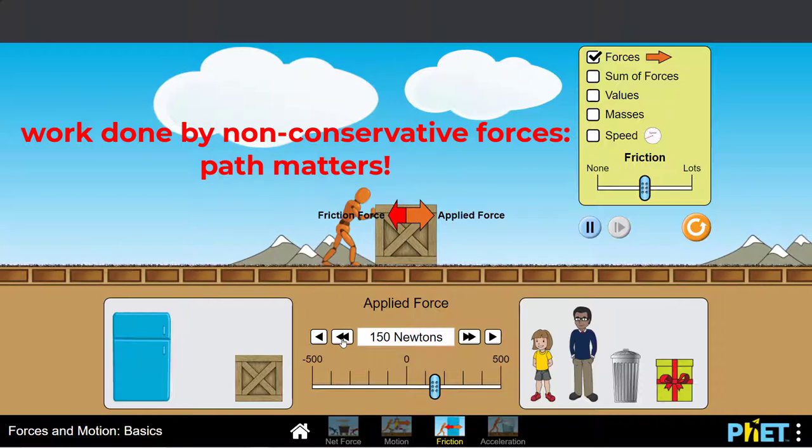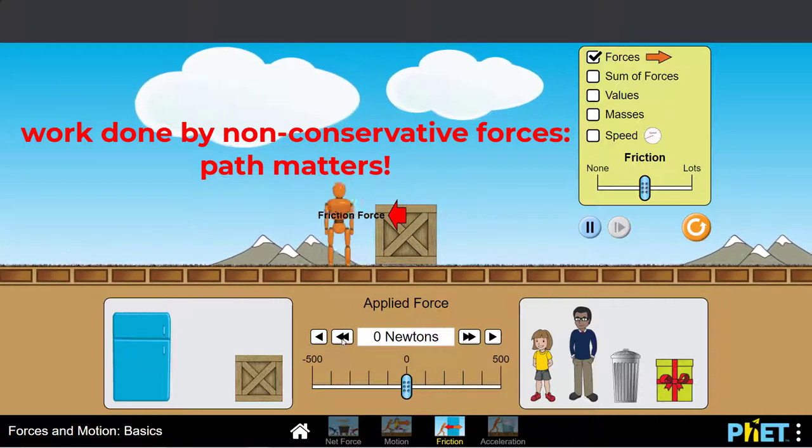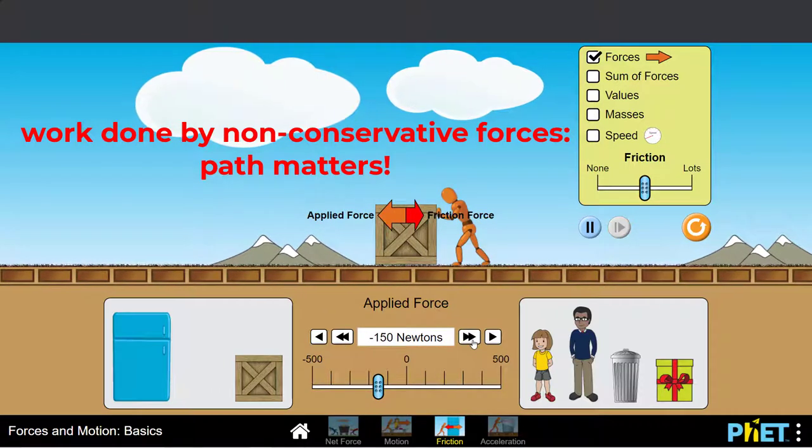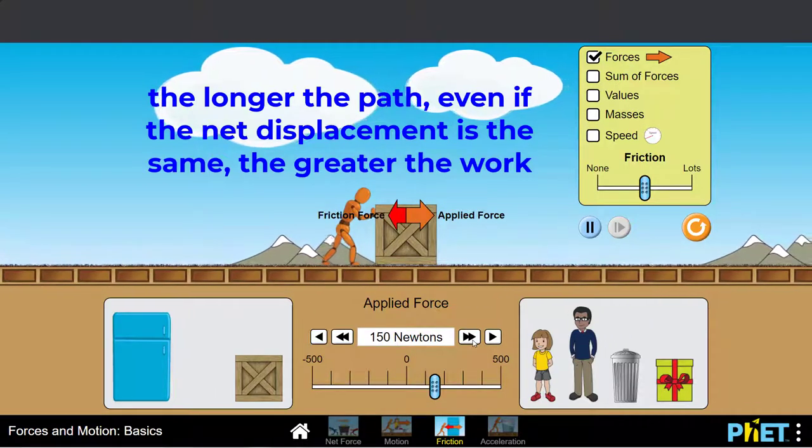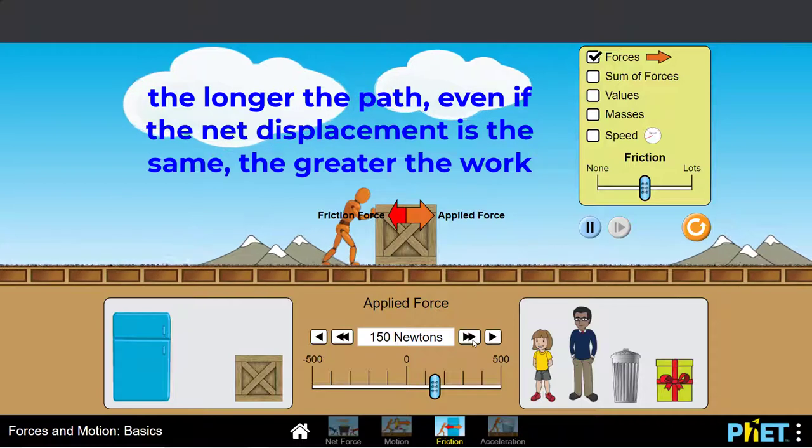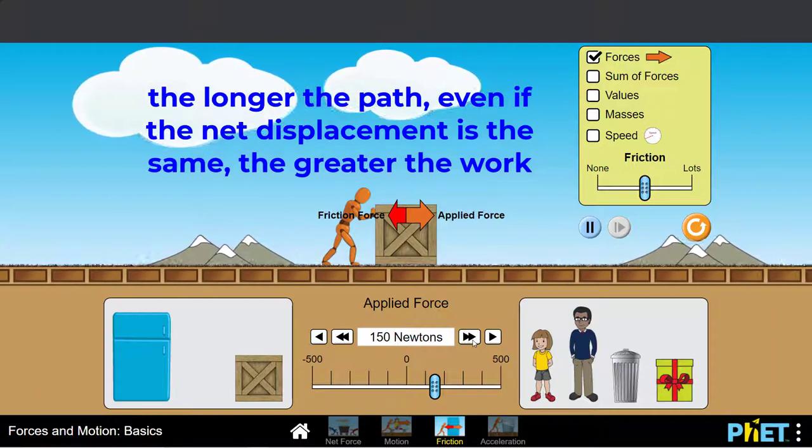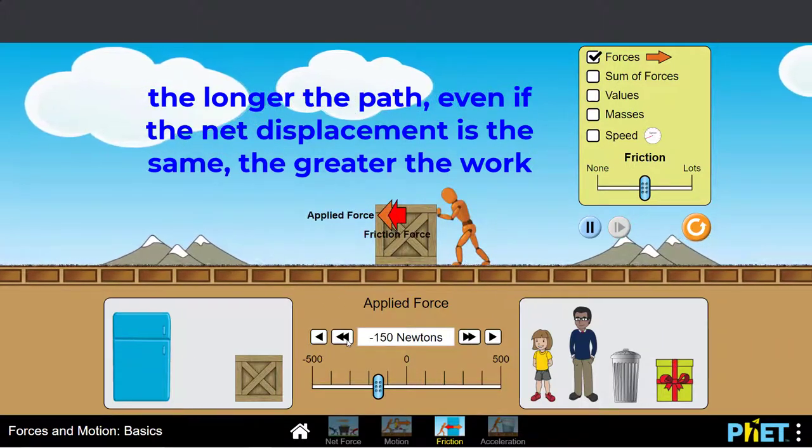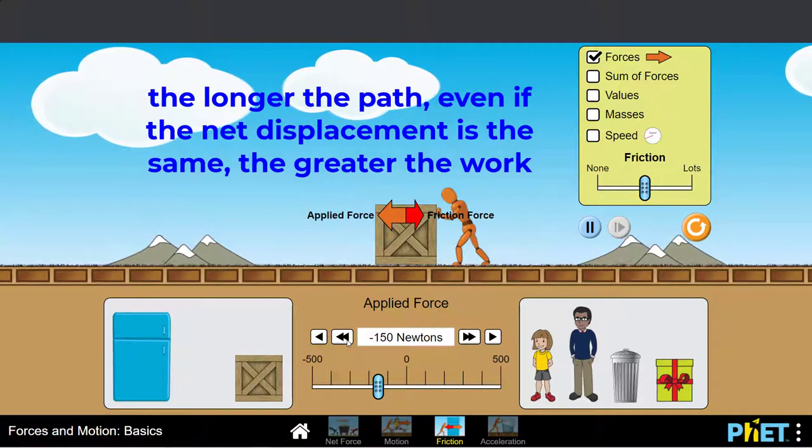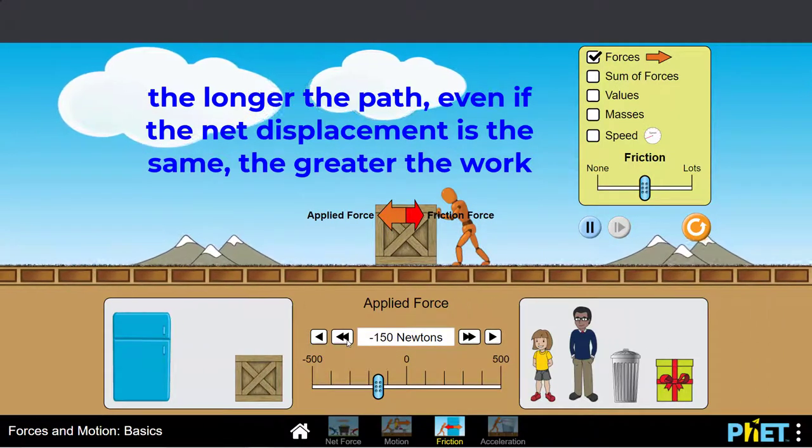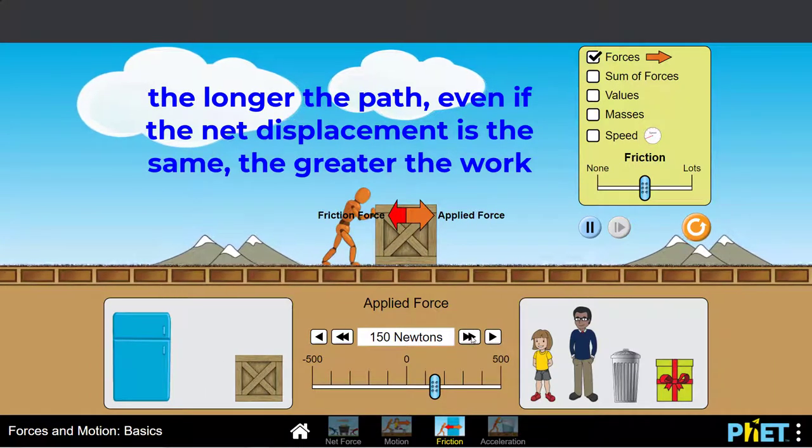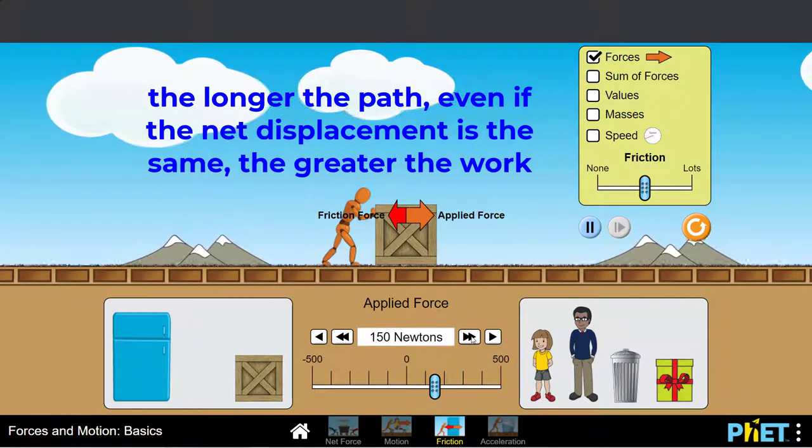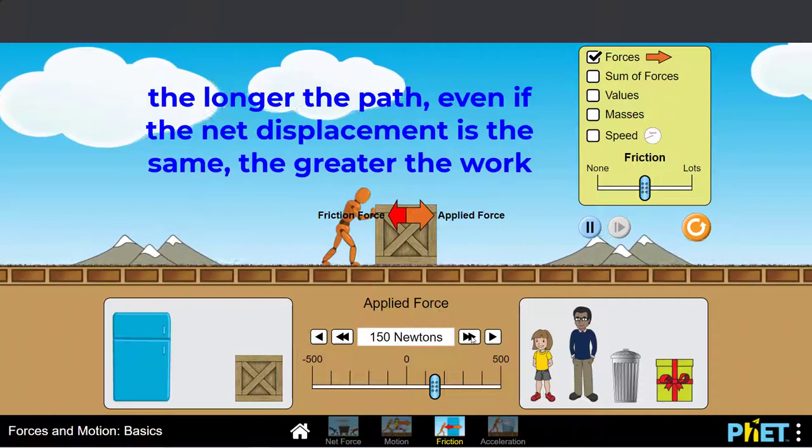Now watch what happens if I do the exact same thing. I'm moving the box from the same initial point to the same final point, but now I'm going on a different path. I'm backing up and going forward, but I still start at the same point and end at the same point. In this case, because the work done by friction is dependent on path, friction has done more work on the box. So in this scenario, even though the net displacement is the same, the work done by friction is different. I generate more heat in the second scenario.